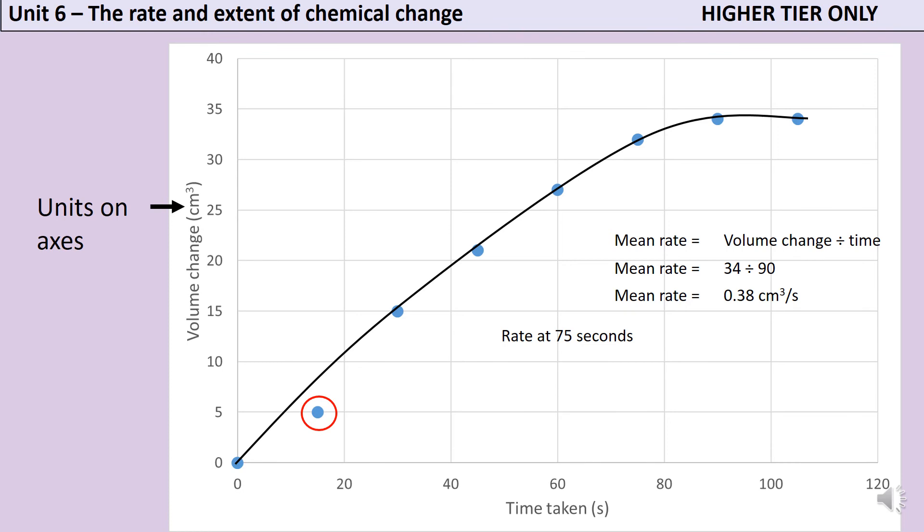In order to do this, I need to know what the gradient of the graph is at this point, but this is quite hard to do for a curve. What I need to do is draw a tangent. That's a straight line that touches the curve in just one place. By calculating the gradient of this tangent, I can calculate the gradient of the curve.